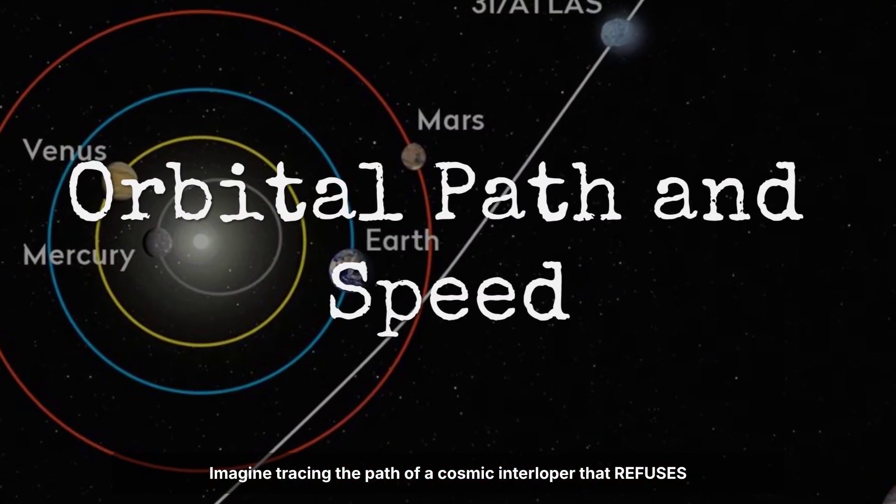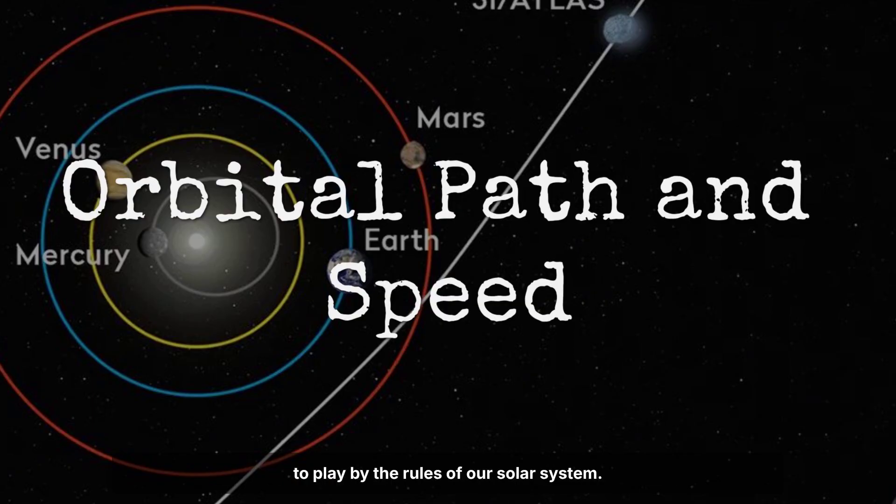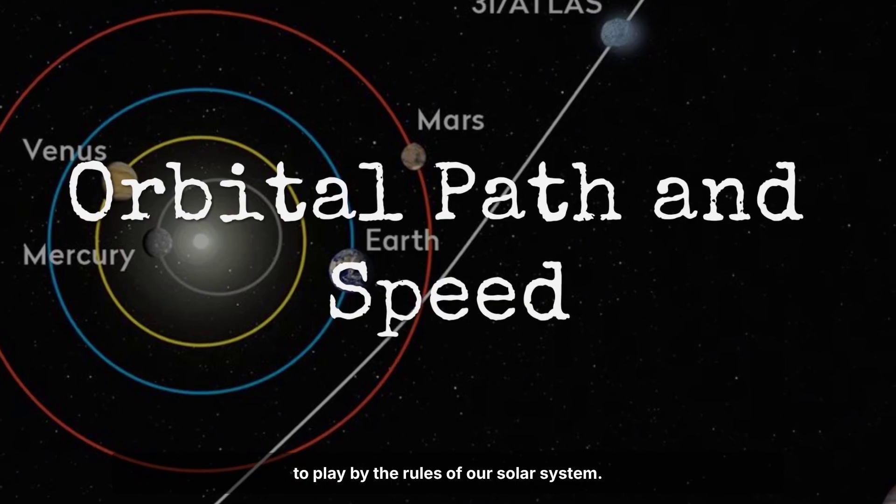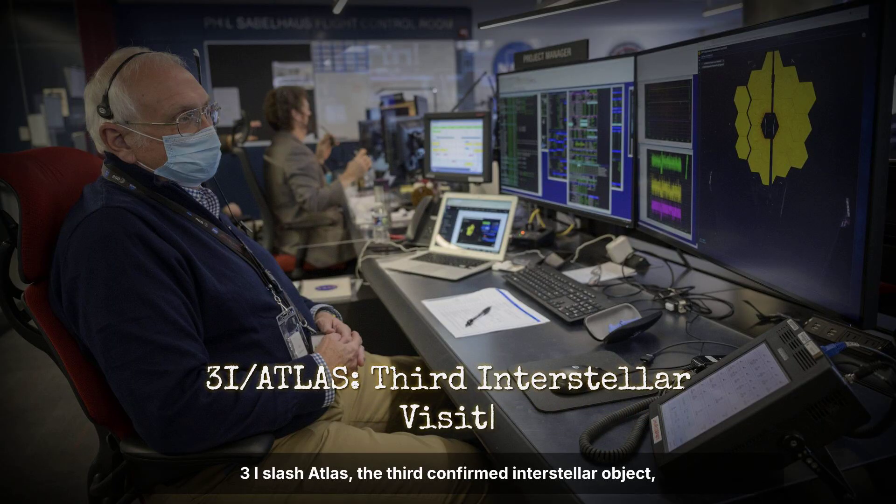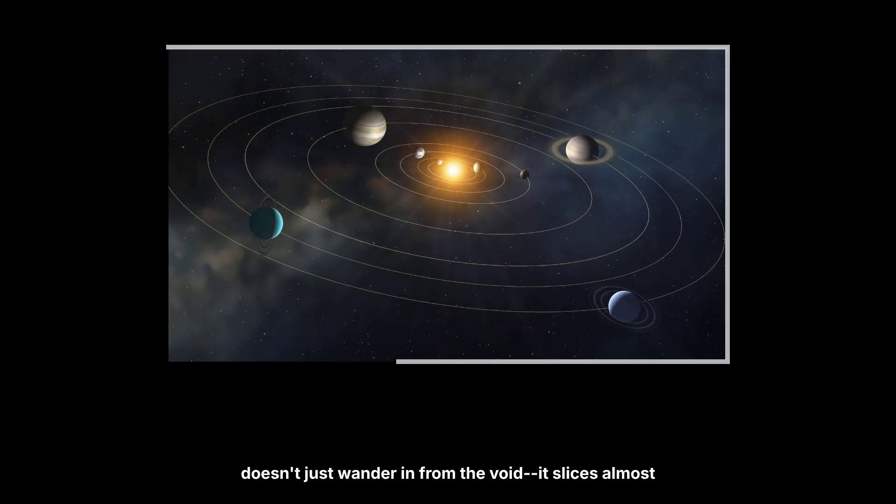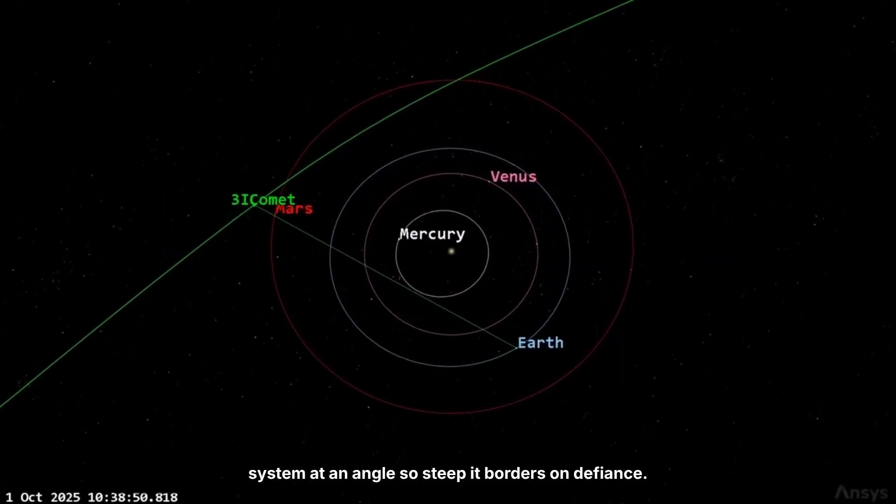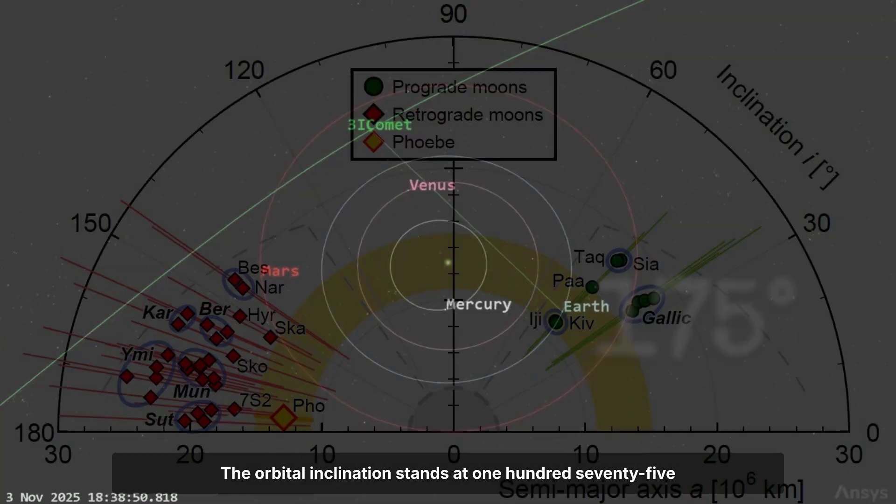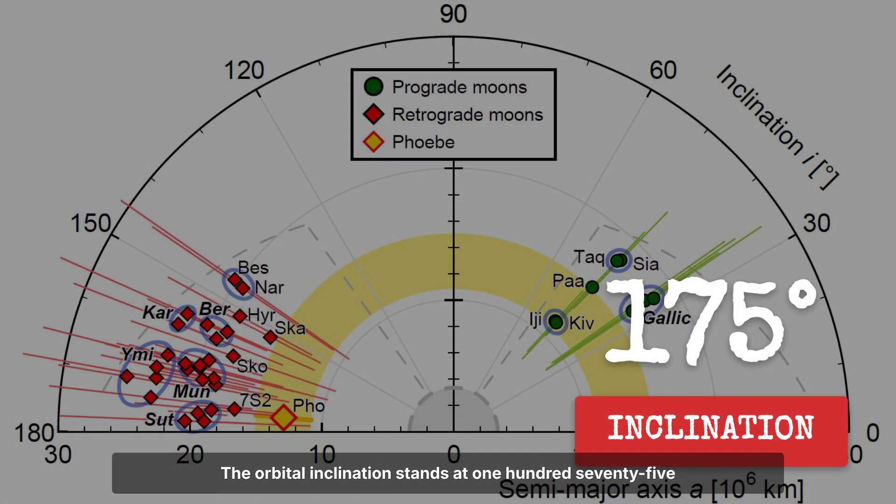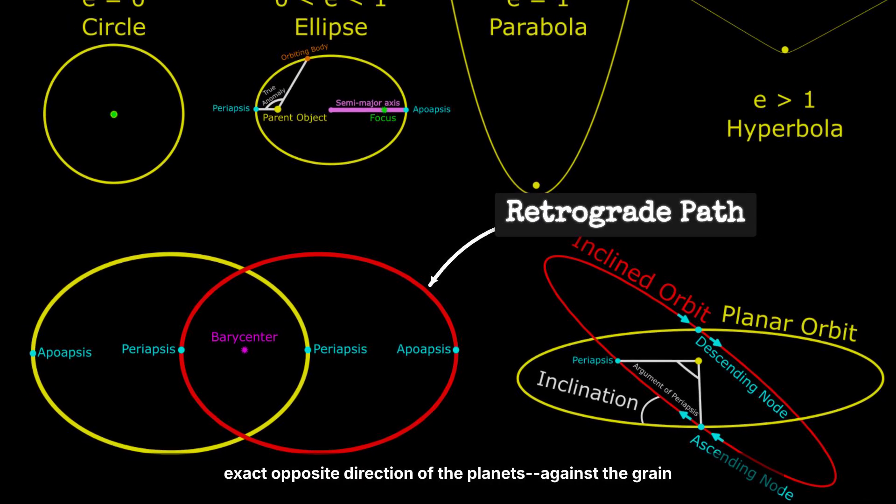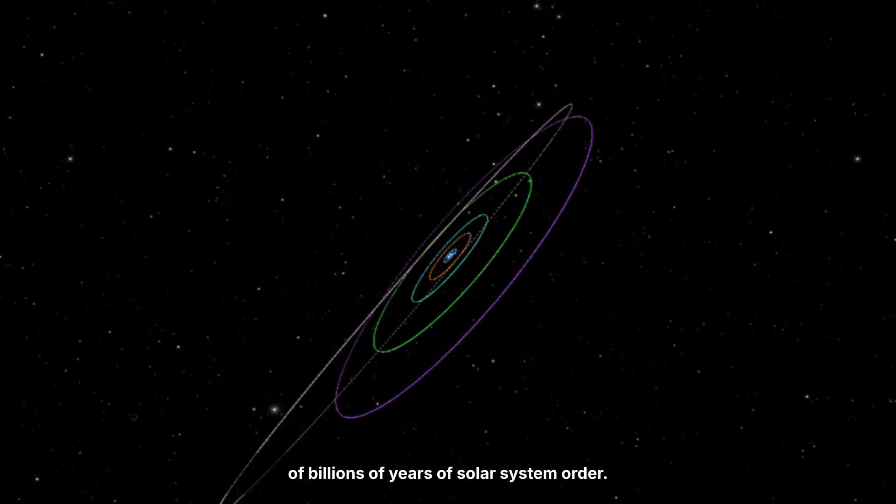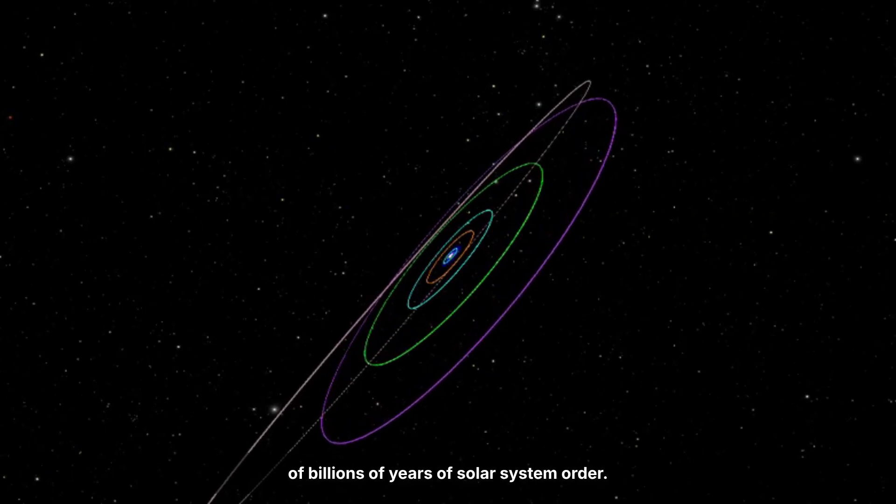3I-Atlas, the third confirmed interstellar object, doesn't just wander in from the void, it slices almost directly through the planetary plane, entering the inner system at an angle so steep it borders on defiance. The orbital inclination stands at 175 degrees, a near-perfect retrograde, meaning it moves in the exact opposite direction of the planets, against the grain of billions of years of solar system order.